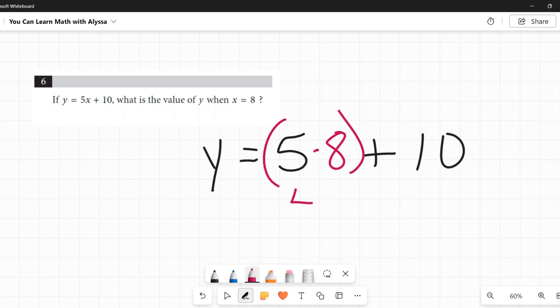5 times 8 is 40. I need to add 10 and that gives me 50. So when x is 8, y is equal to 50. 50 is my answer.